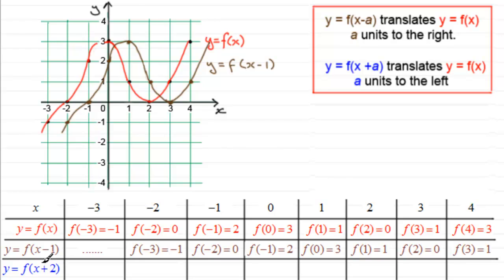This time we'll start from the other end, starting with x equaling minus 3. If x is minus 3, y would be equal to f of minus 3 plus 2, in other words f of minus 1. And what is f of minus 1? We can see from here that f of minus 1 was 2. So when x is minus 3, the y value is 2 — we've got that point there. And can you see that what we've got is that this point has moved two units to the left.